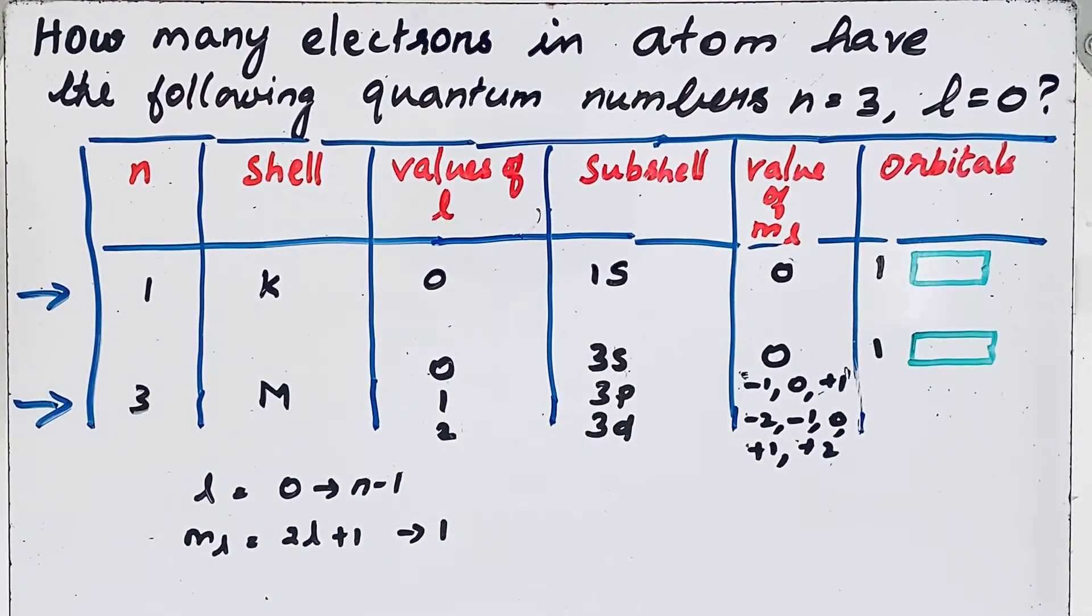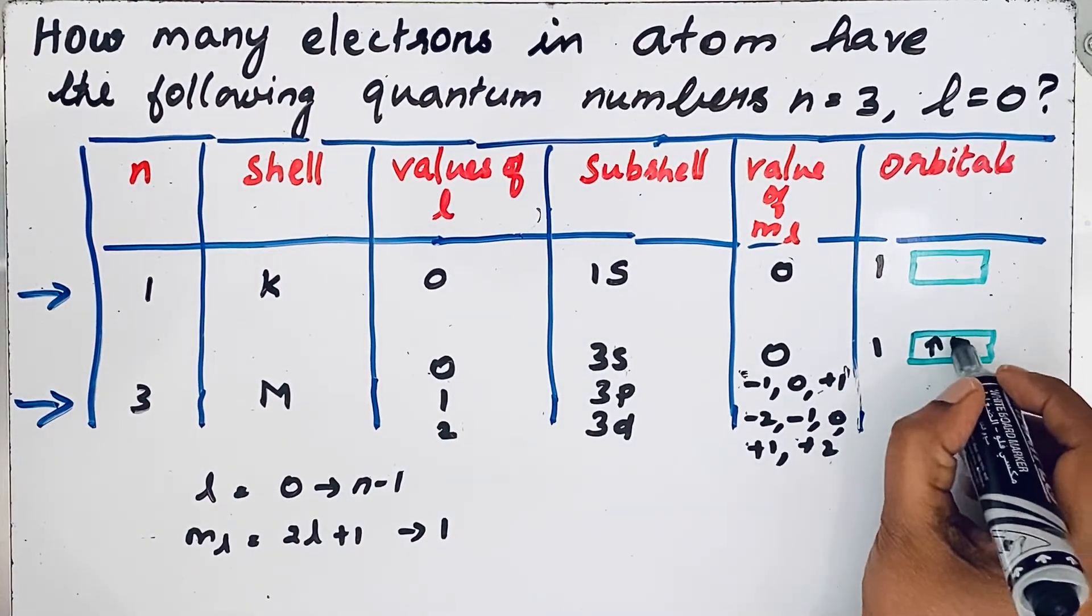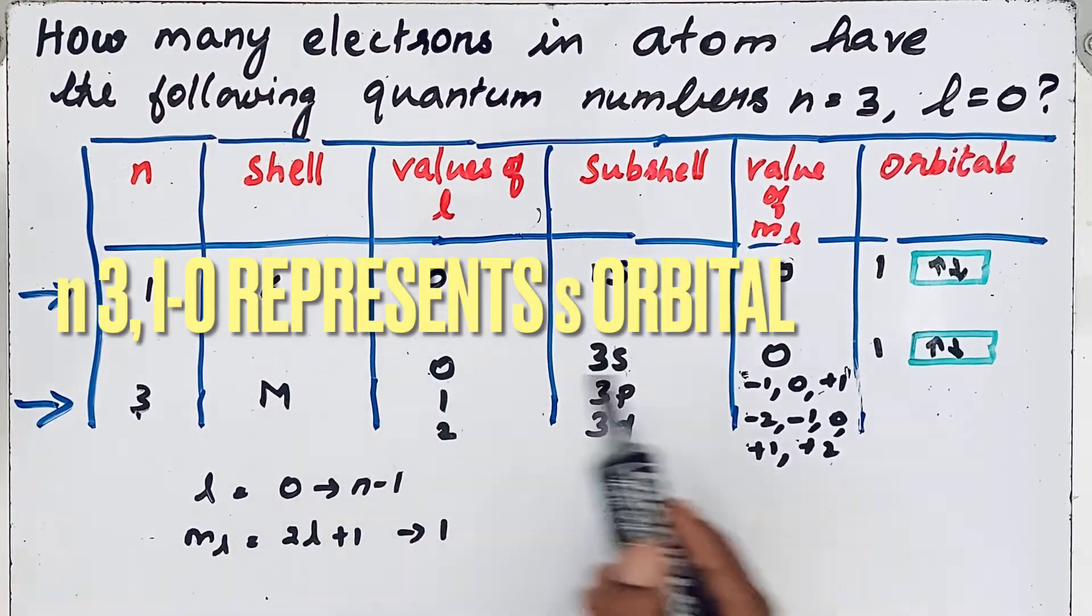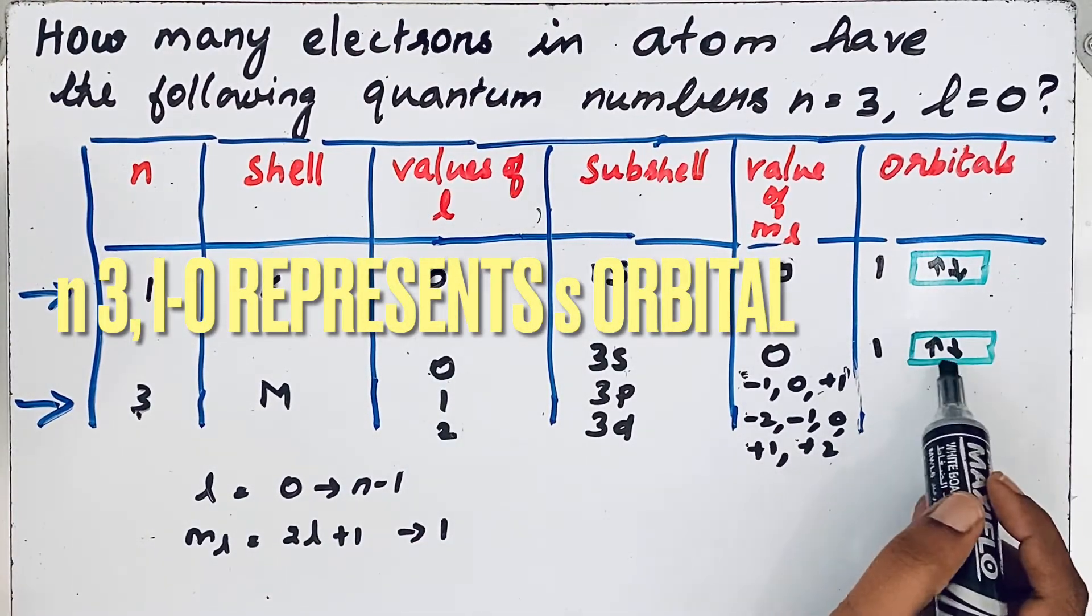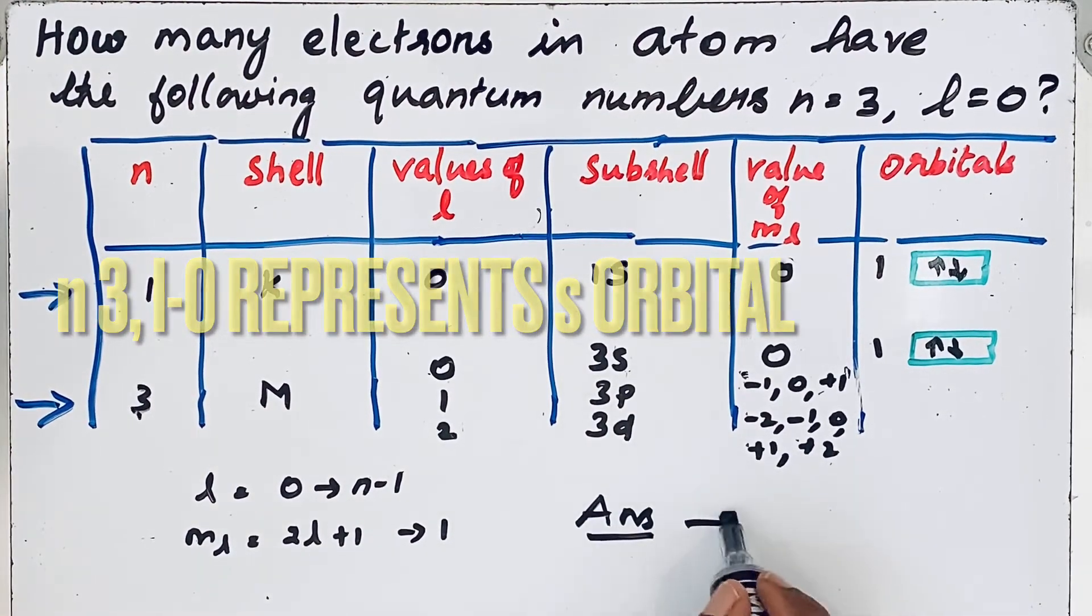According to Pauli's exclusion principle, only two electrons can exist in an orbital. We can show this way. For n equals 3 and l equals 0, the orbital can hold only two electrons. The answer for this question is only two electrons.